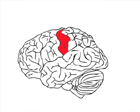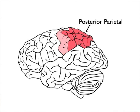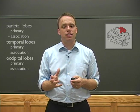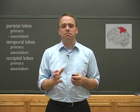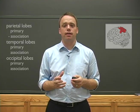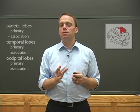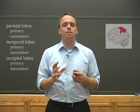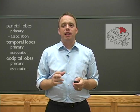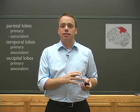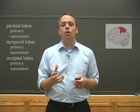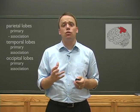Just behind the somatosensory cortex lies the posterior parietal area, which is the association area for the parietal cortex. The posterior parietal area actually consists of several subdivisions, but here we'll talk about it as one functional unit. Perhaps the most important thing to know is that it is the location of massive multisensory integration. Because it integrates somatic sense with visual and auditory information, the posterior parietal area plays an important role in tracking and guiding movement in space.